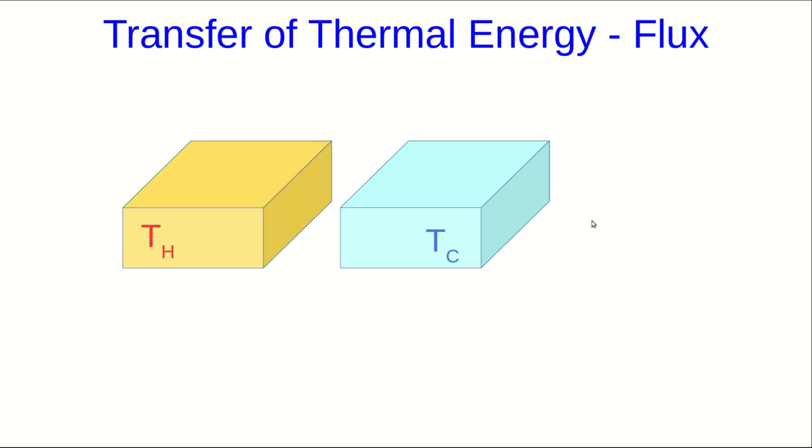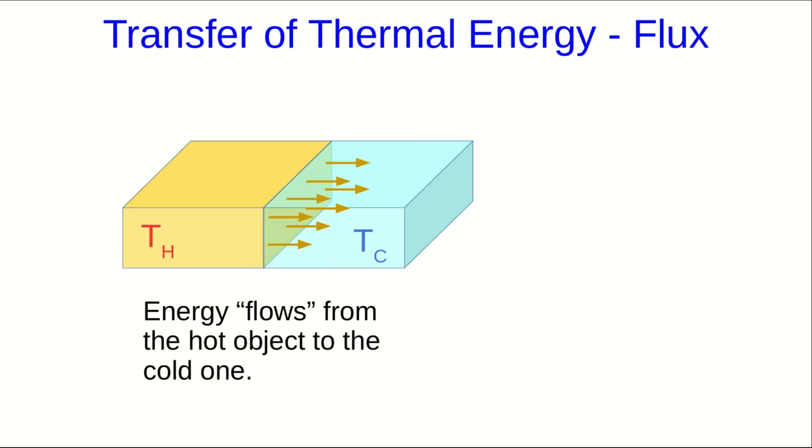One of the basic ideas we need is flux. When we take two objects at different temperatures and put them together, we already know that there's a transfer of thermal energy from one to the other. We often say that energy flows from the hot object to the cold one. We're using language as if energy is a fluid here. It isn't, but we'll often use language that suggests that it is. In any case, it will flow through the surface that joins the two objects.